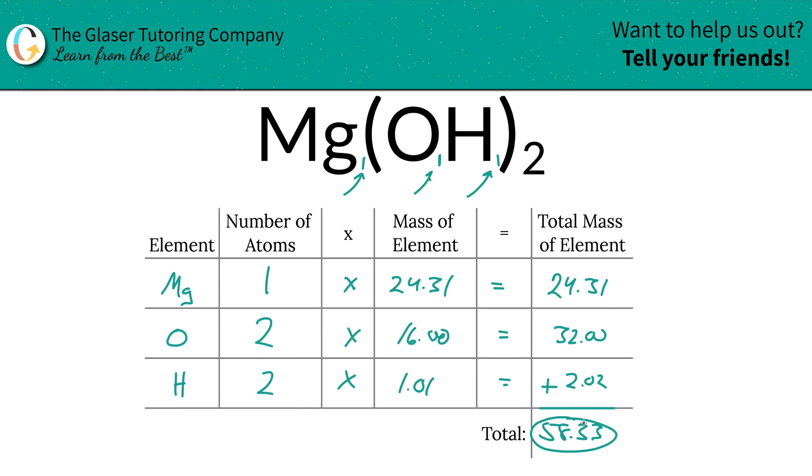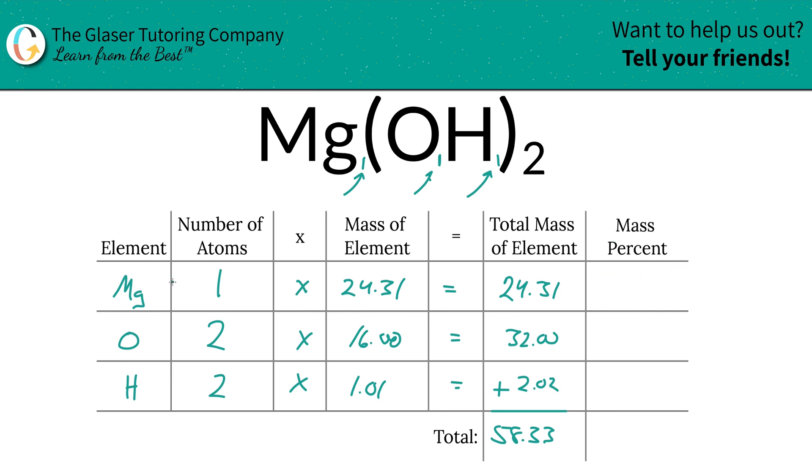So to find the total mass of the entire compound, all we got to simply do is now add up this column, and that's going to be 58.33. That's the first step of the process: finding the total mass of the compound.